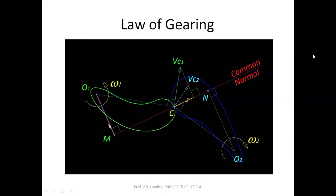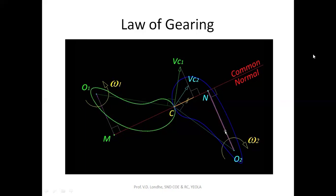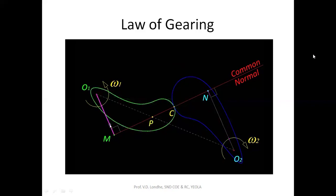In effect, points M and N have identical velocity components along the common normal. Because of how they were located — via perpendiculars from the centers — their entire velocity is directed along the common normal, and these velocities are equal. Since both bodies are in rotation, we write velocity of M as O1M × omega 1, and velocity of N as O2N × omega 2, giving us O1M × omega 1 = O2N × omega 2.